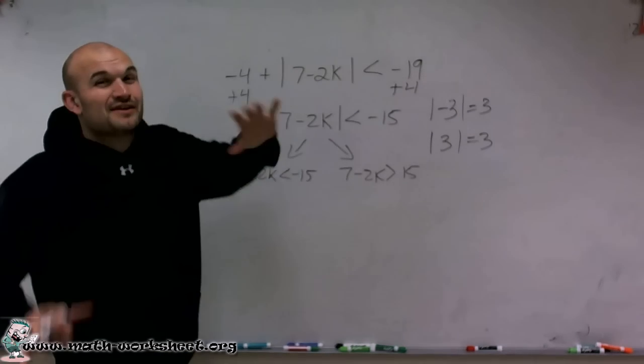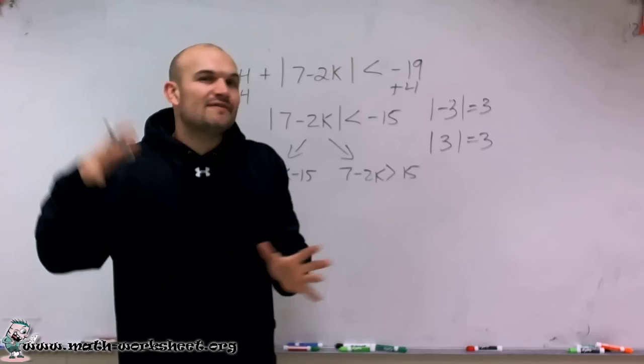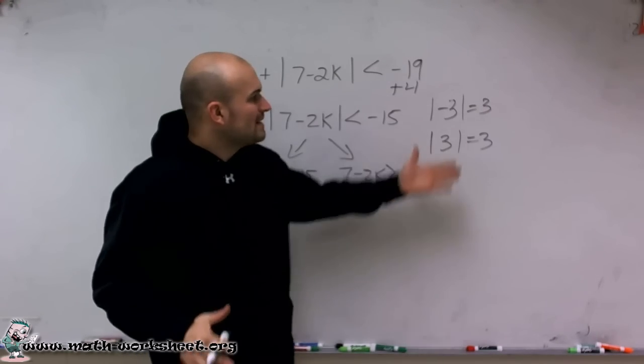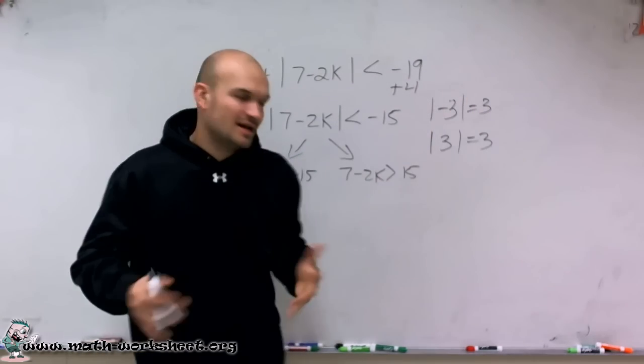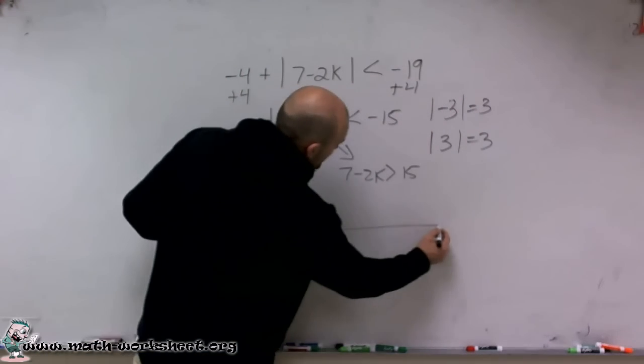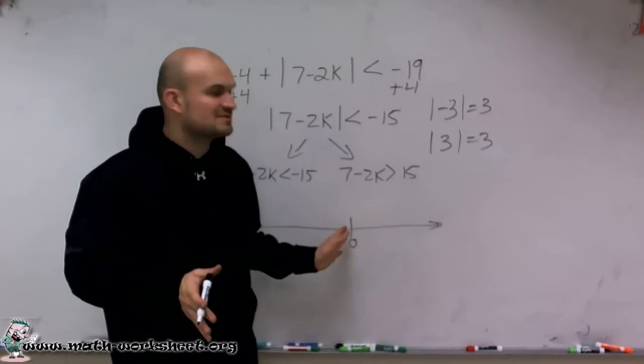because if I take the absolute value of any number, it doesn't matter positive, negative, how big, how small, are we ever going to get a negative value? And you might say, well, no, but why is that? Remember, absolute value is the absolute distance from 0.